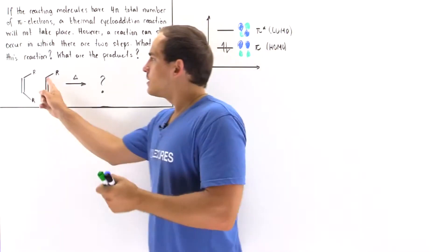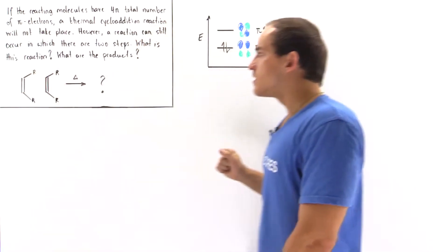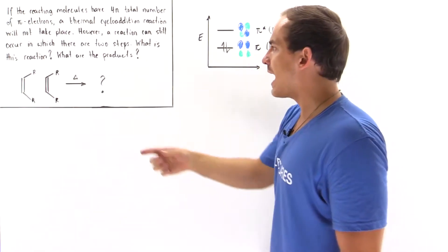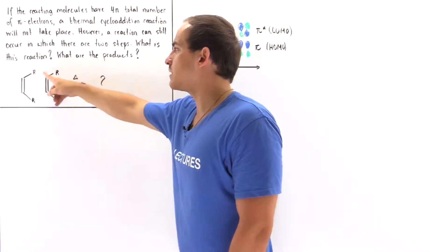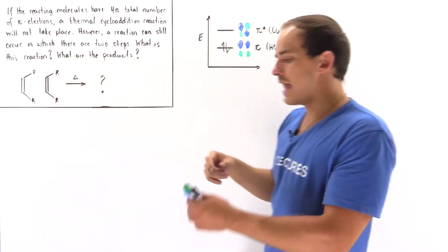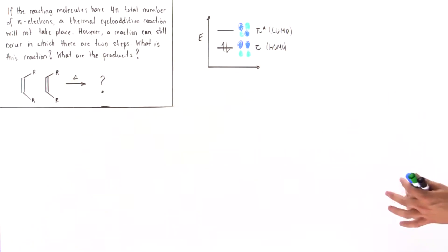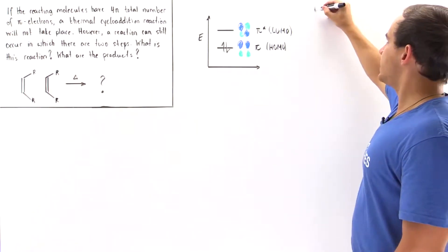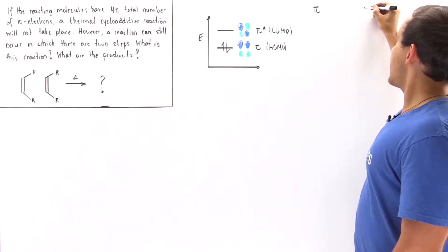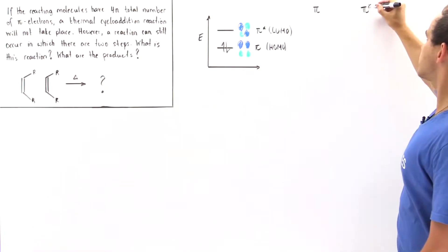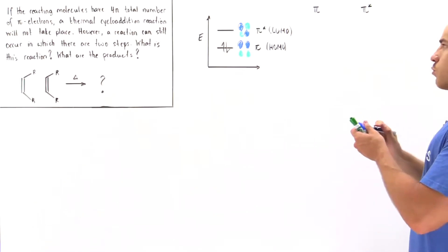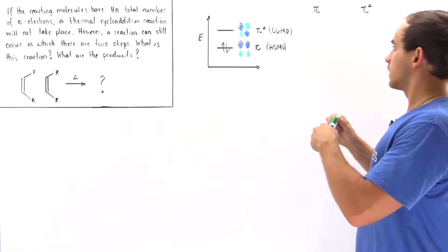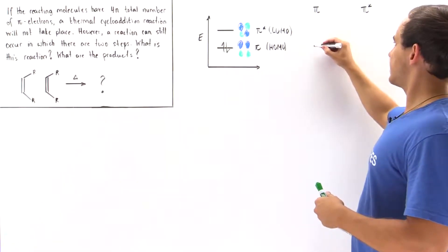Let's suppose that one molecule uses its HOMO to interact with the LUMO of the second ethene molecule. The reaction is therefore between the pi orbital of one molecule and the pi star orbital of the other. So basically it looks something like this.